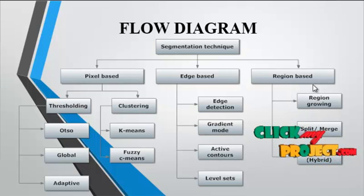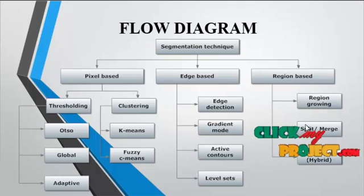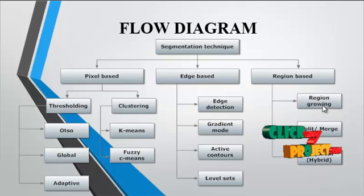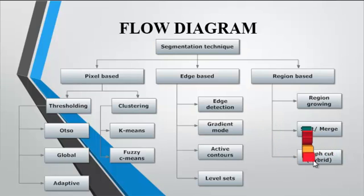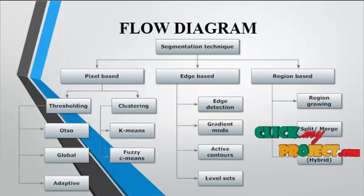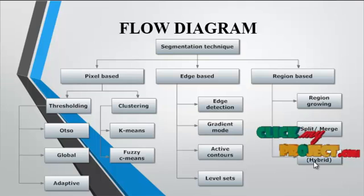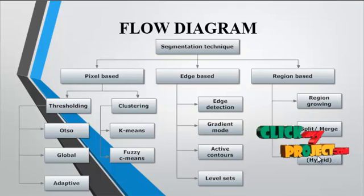The region-based method is then carried out. In the region-based method, we apply three techniques: region growing, split-by-merge, and graph cut. Region growing segments the image separating the region of interest from the background. We apply the split-by-merge technique along with the graph cut method, which is identified here as a hybrid method. According to the split-by-merge and graph cut method, we segment the image into region of interest and background.